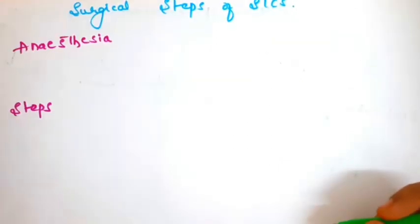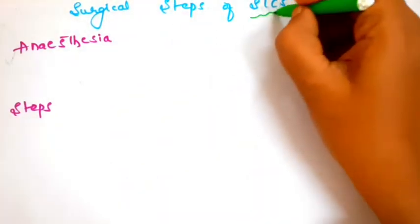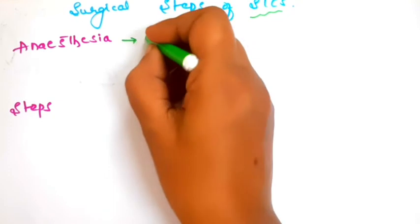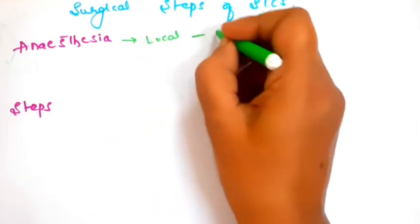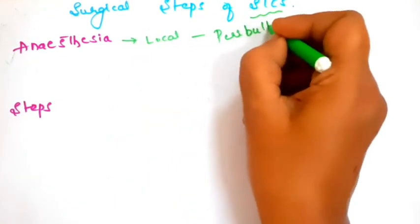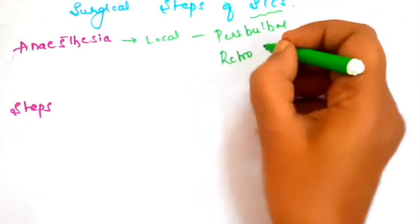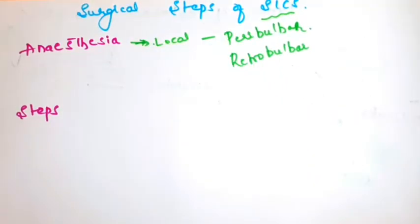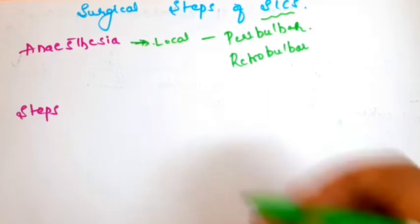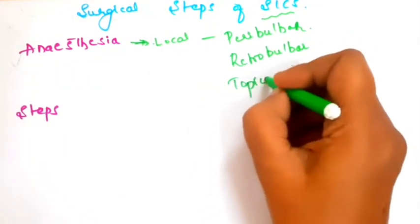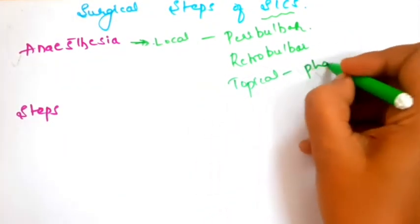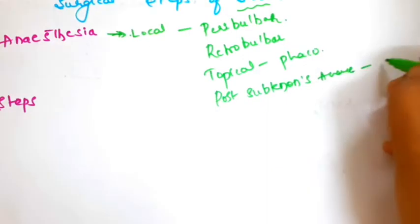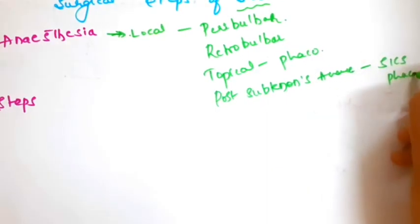Coming to the steps of small incision cataract surgery. The first step is anesthesia. It is usually local anesthesia in the form of peribulbar block or retrobulbar block — these are the two forms commonly used for SICS. Other types include topical anesthesia, which is used for phacoemulsification, and subtenons anesthesia, which can be used for both SICS and phacoemulsification.